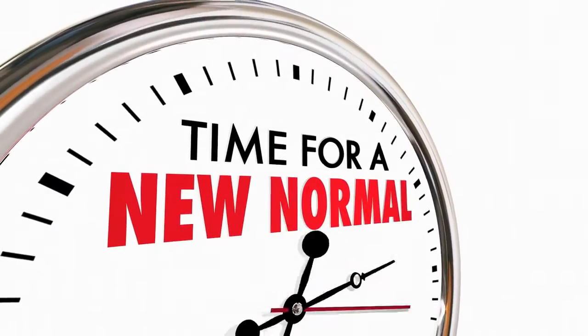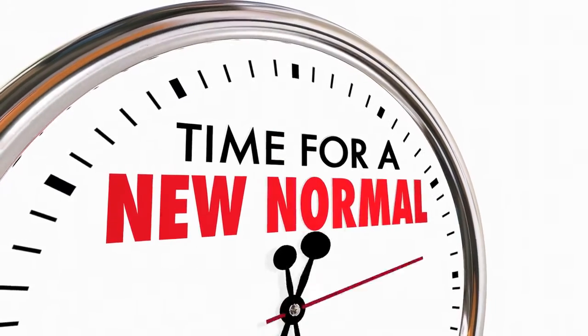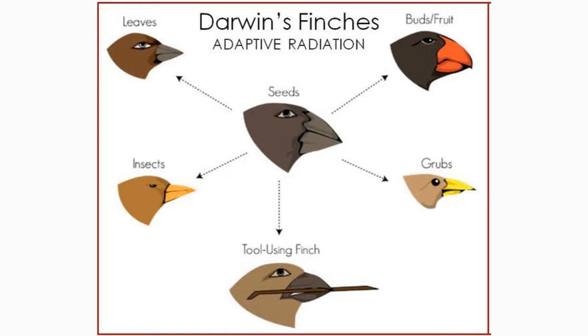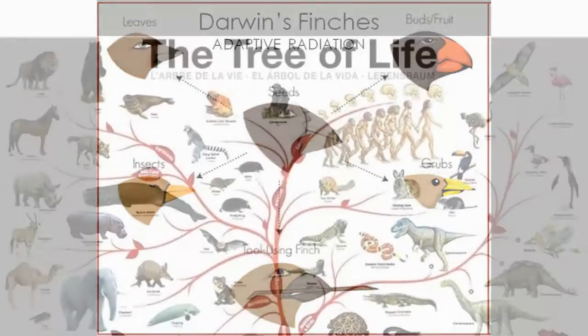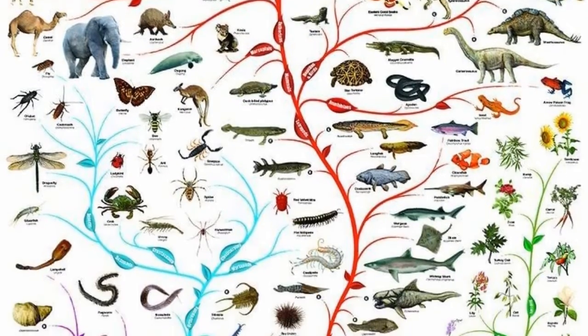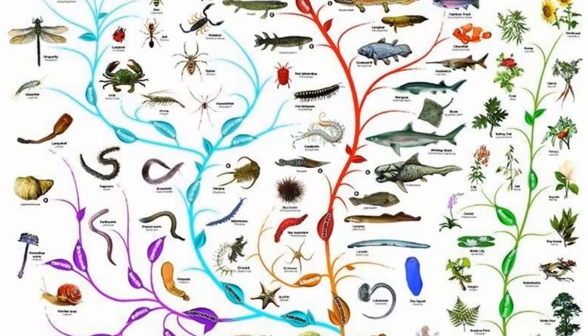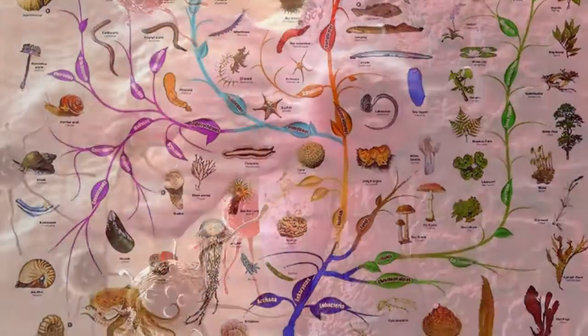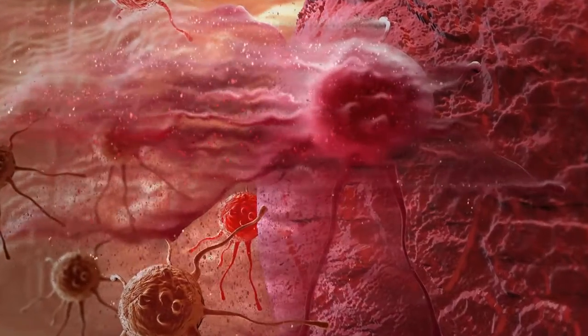Humans can speed up the process of evolution by choosing traits we want to see in our pets and even our plants. The slower process that occurs without human intervention is called natural selection. Charles Darwin proposed the idea that living things change because of their environments, due to mutations that help them survive. Those that do not survive will not pass on the old genetic material, which may lead to the extinction of a species if none of the varieties can mutate to survive.